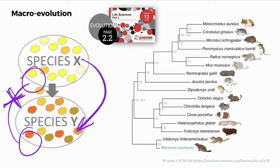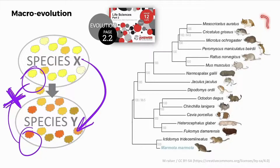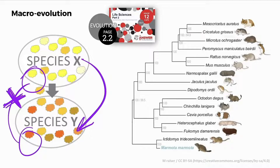Macroevolution can also be seen in a phylogenetic tree — a branch diagram that shows evolutionary relationships between different organisms. Each point of branching indicates a common ancestor and a point of speciation. For example, if we follow the ancestry of the house mouse and the golden hamster back through the diagram, the two have a common ancestor at a particular branching point.